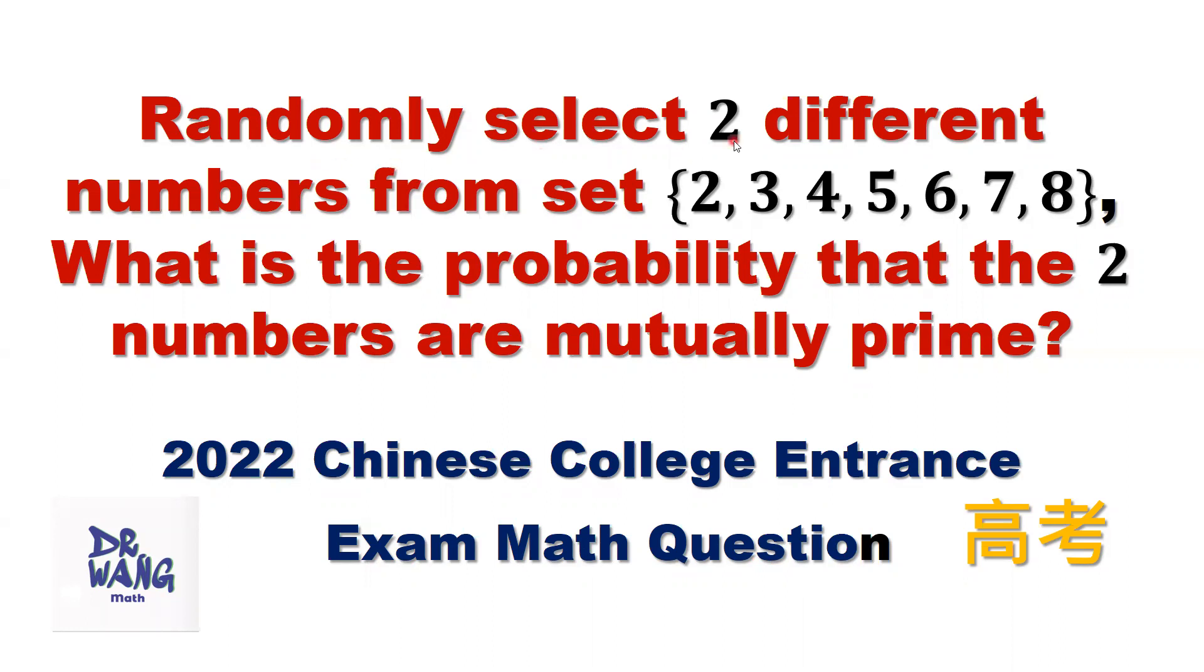Randomly select two different numbers from this set: two, three, four, five, six, seven, eight. What is the probability that the two numbers are mutually prime?